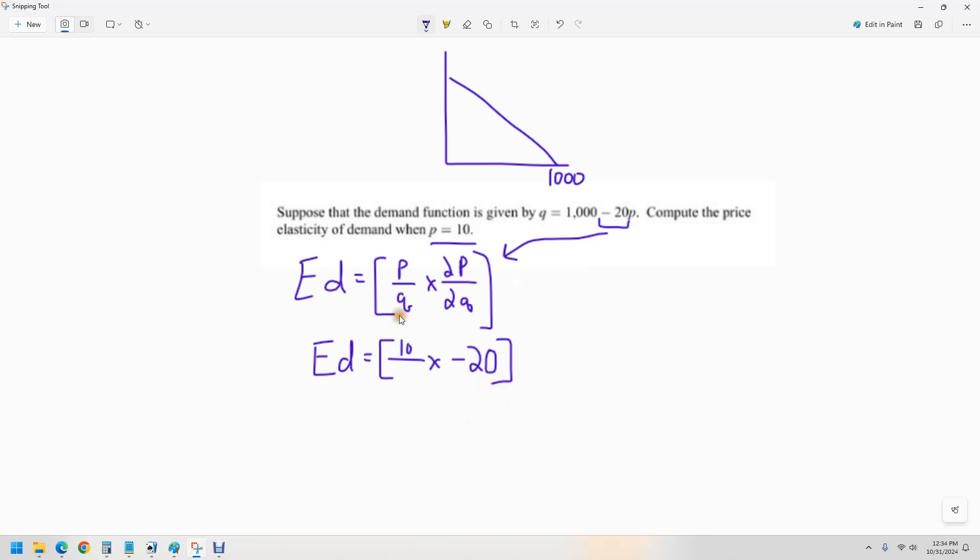So I need to know what the quantity is. I'm just going to plug in 10 into that function right there. I think I can do this in my head. 1,000, but I'll write it out to show you. 20 times 10 would be 200. So this would be a quantity of 800. In other words, when the price is 10, we're going to sell 800 units or the consumers will want to buy 800 units.